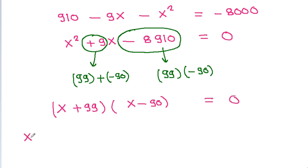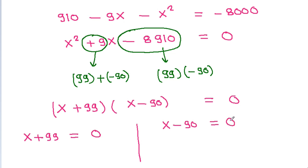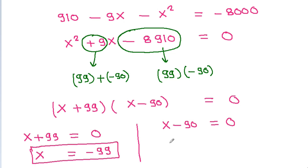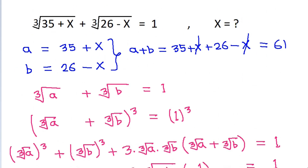So either x plus 99 equals 0 or x minus 90 equals 0, giving x equals minus 99 or x equals 90.